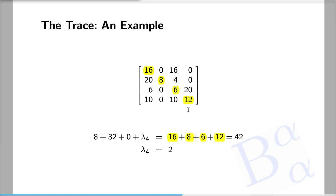Thus, we have determined three out of the four eigenvalues: 8, 32, and 0. But the sum of all four eigenvalues is the trace, or 42. Therefore, the remaining eigenvalue must be two.